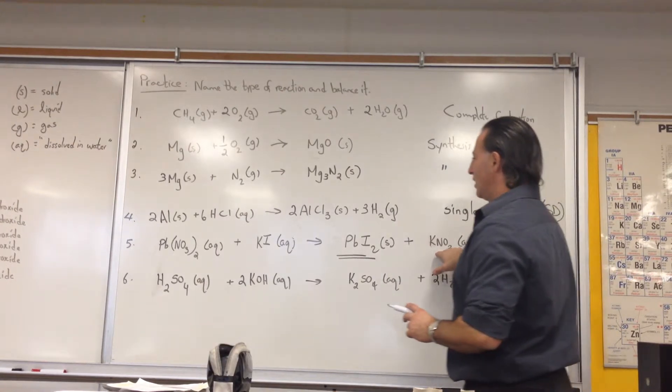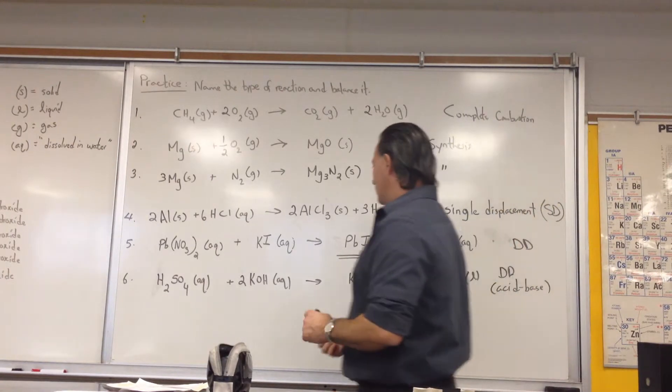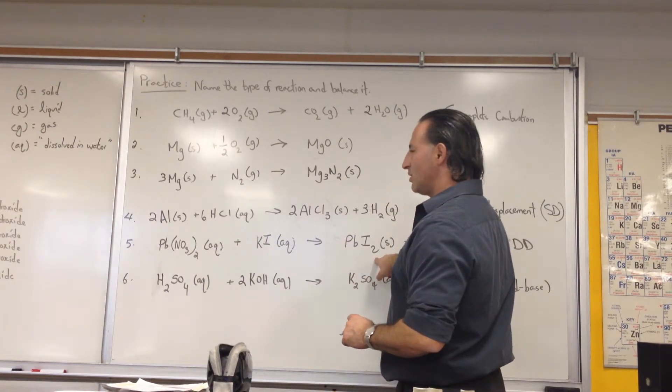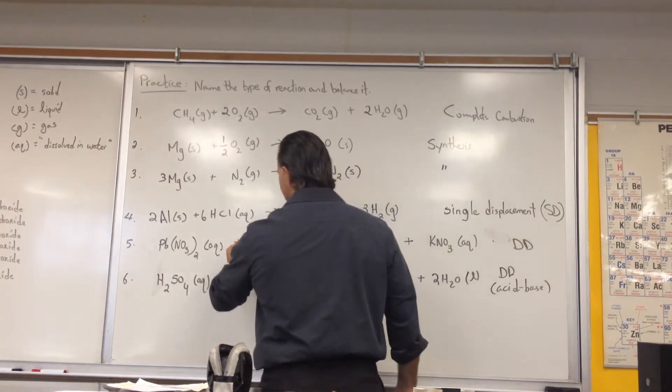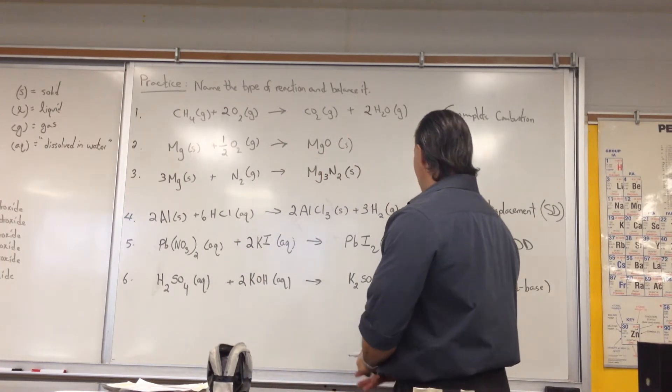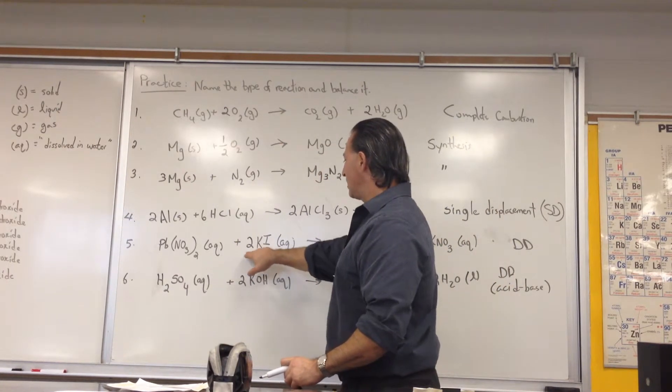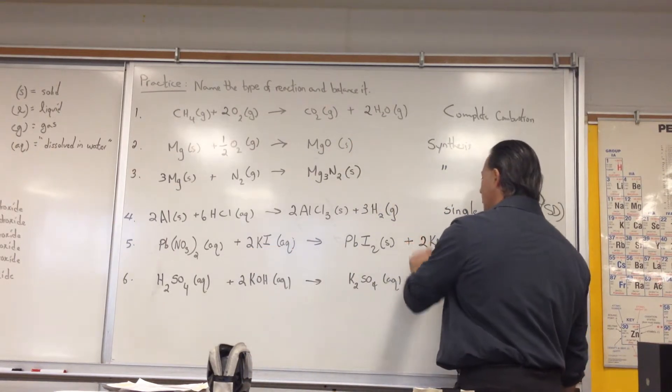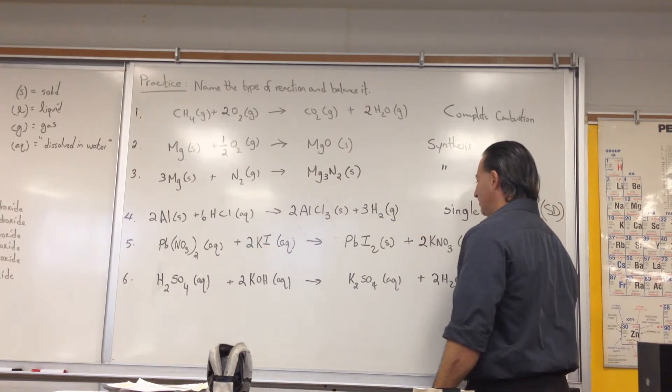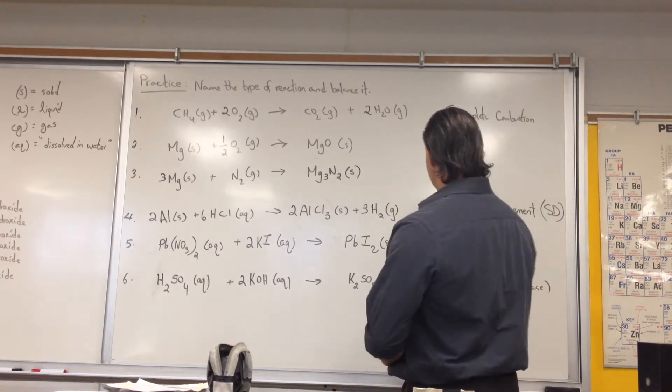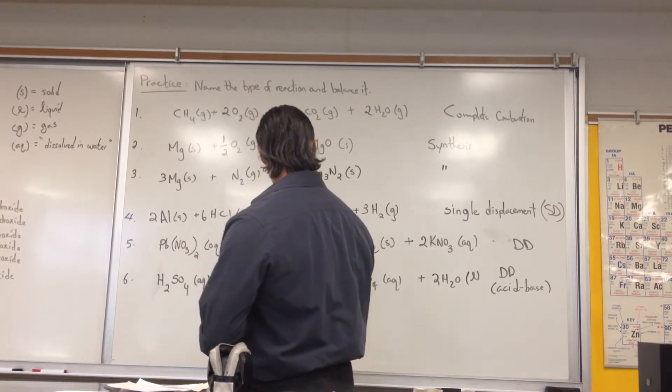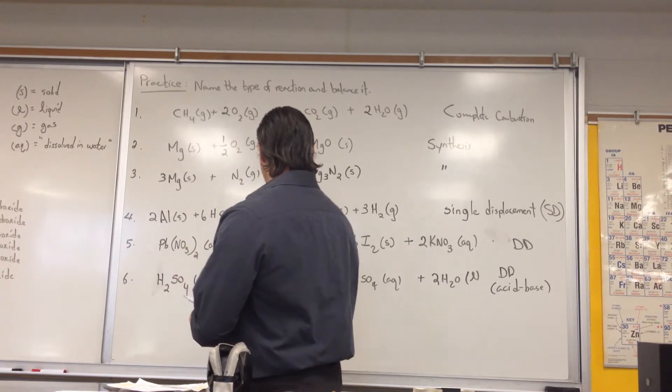How do we balance it? The first thing I looked at is I saw the two next to iodide, so I know there has to be two iodides, so I put a two in front of potassium iodide. Then, by putting the two in front of potassium iodide, it forces me to have two potassium atoms, so I'm going to put a two in front of potassium nitrate. Then I see that I have two nitrates, and that balances nicely with the two nitrates over here.